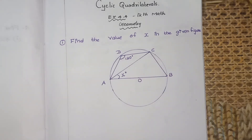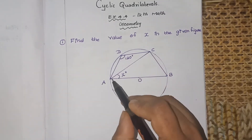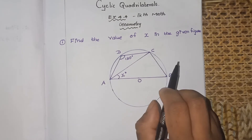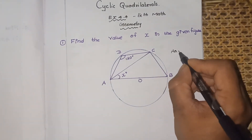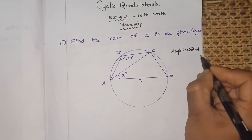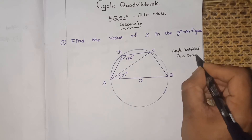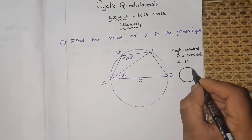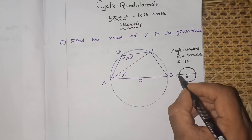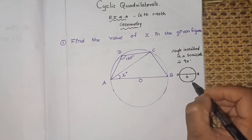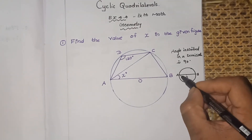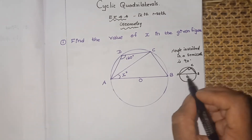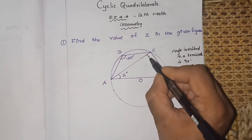Since AB is the diameter, it divides the circle into two semicircles — one above and one below. When an angle is formed in a semicircle, there is a very important concept: angle ACB is an angle inscribed in a semicircle. The angle inscribed in a semicircle is 90 degrees.